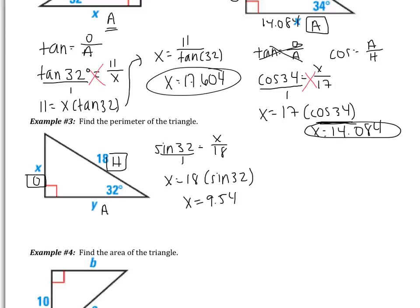Now when it comes to finding y, I need to use adjacent because that's what I'm looking for. And then the side that I was given was the 18, the hypotenuse. Adjacent and hypotenuse is going to be cosine. So I have the cosine of 32 equals y over 18 adjacent over hypotenuse. This gives me y equals 18 multiplied by the cosine of 32.